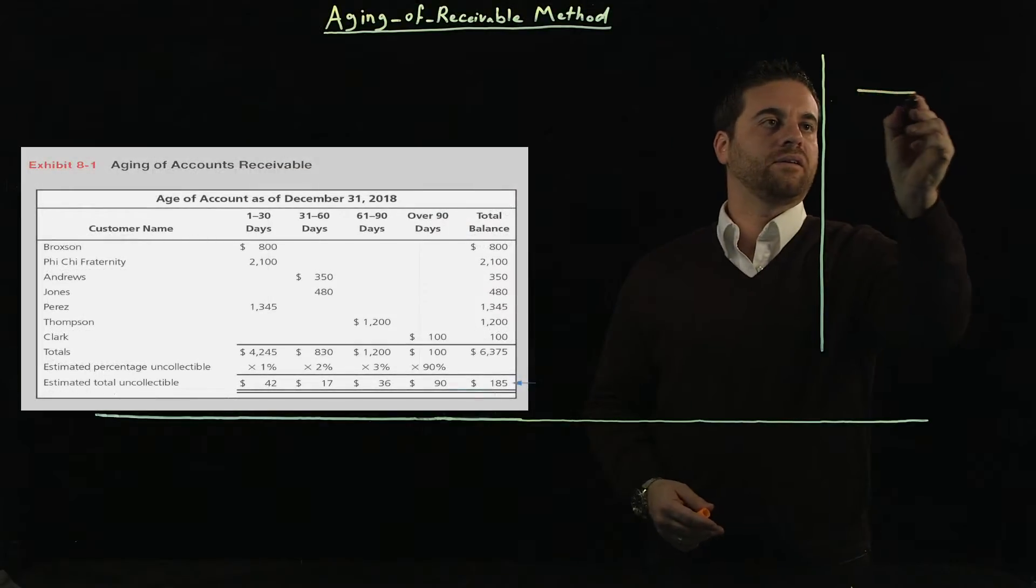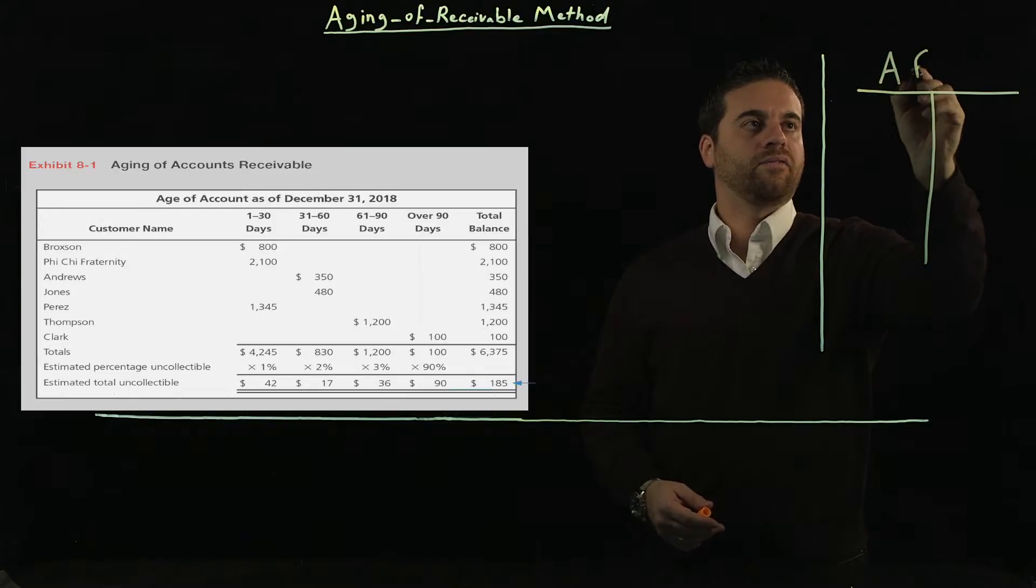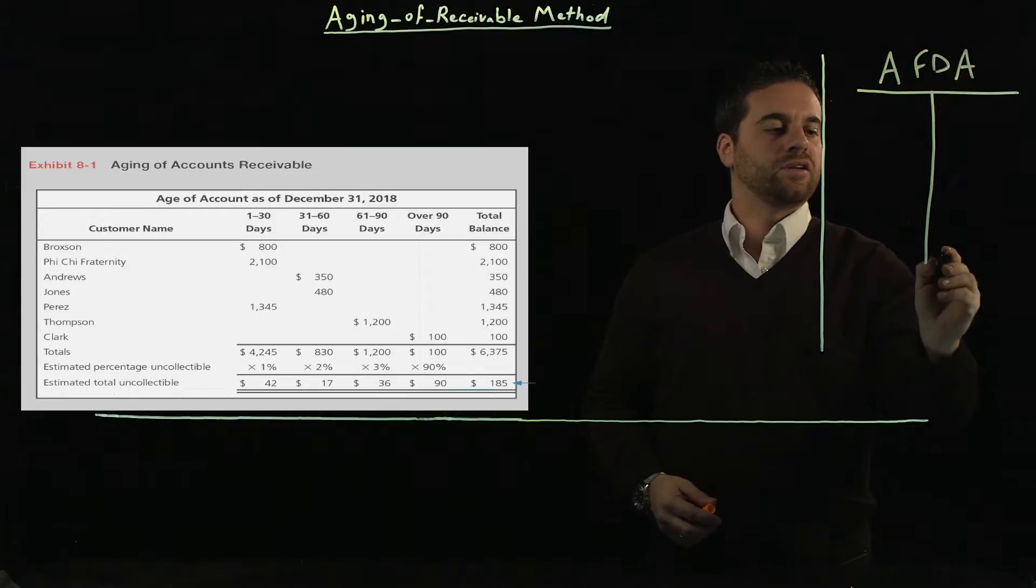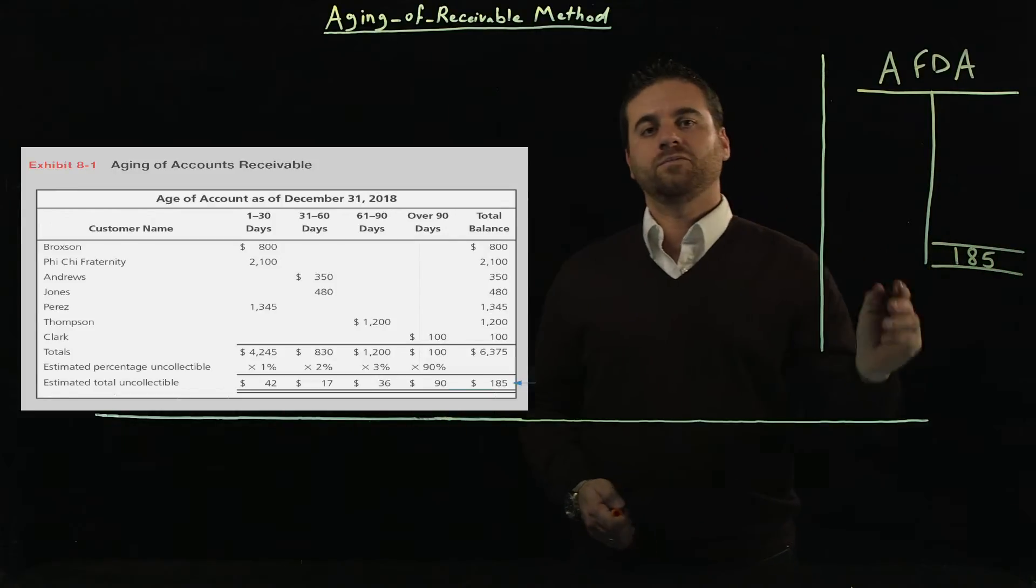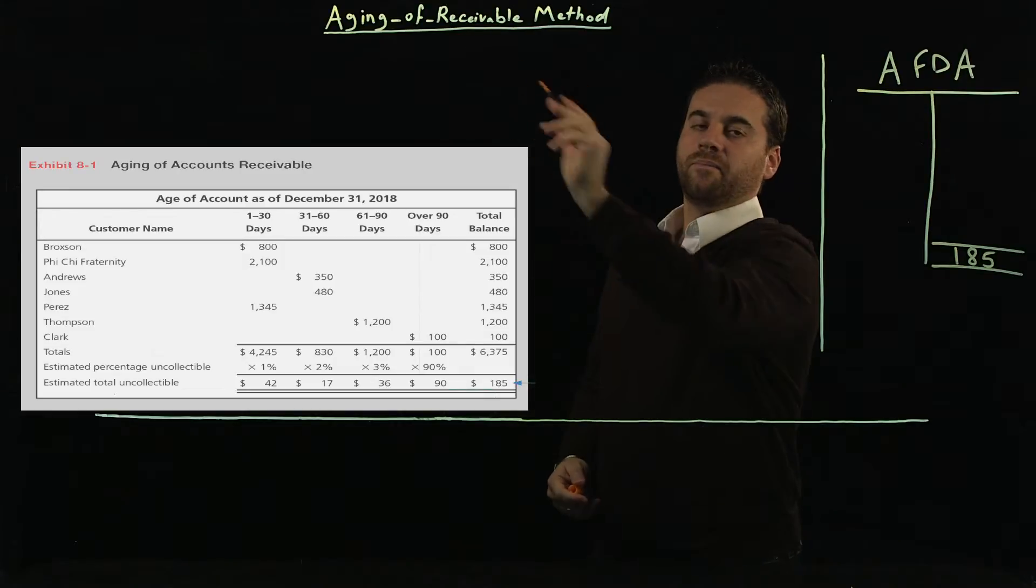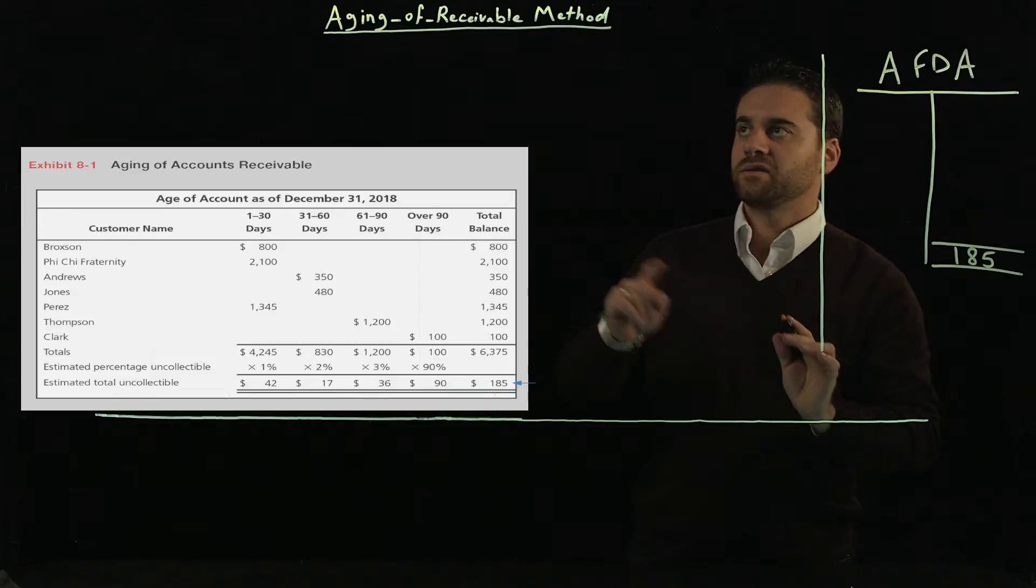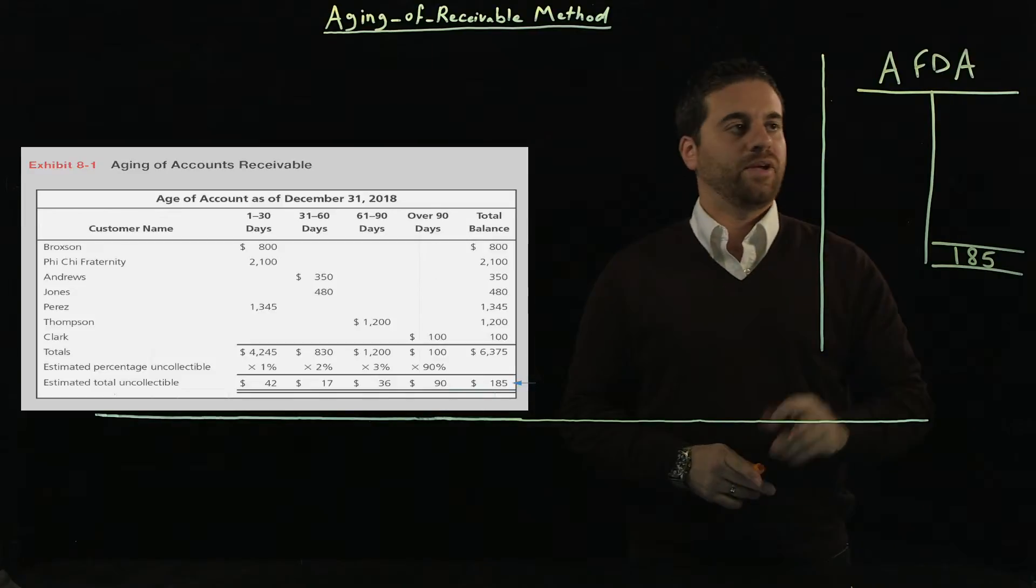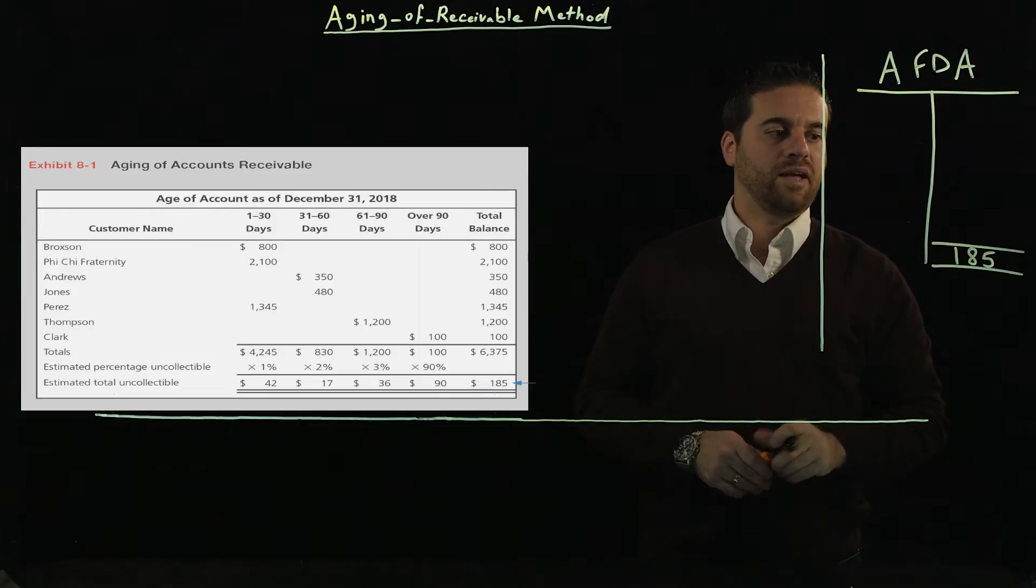So let's make a T account here just like we did in the previous video for the AFDA. So again, the amount we came up with, 185, that has to be the ending balance. Remember, that's not the amount we should have in the journal entry because we're using the percentage of receivable method, not percentage of sales. So be careful. It's not going to be directly to the journal.